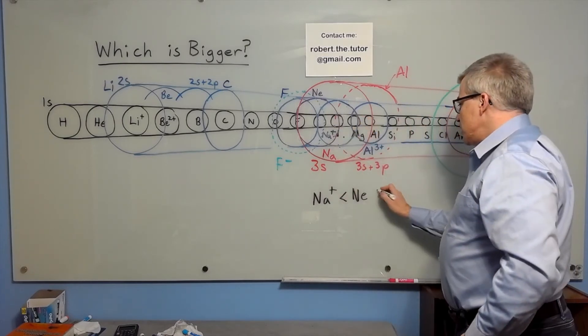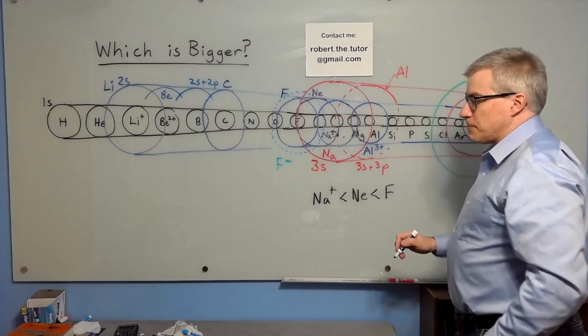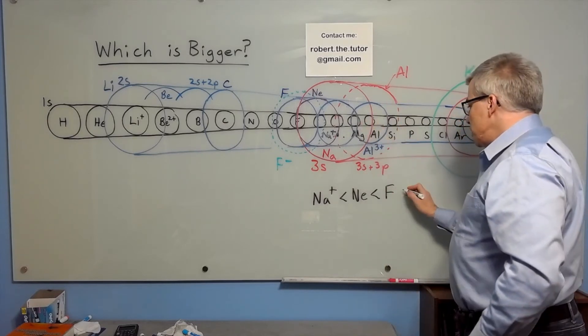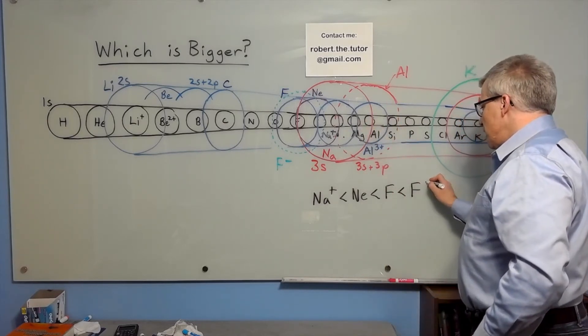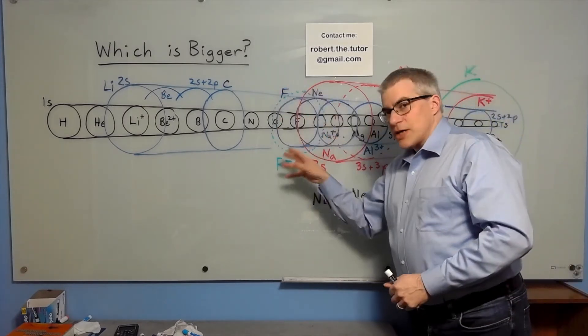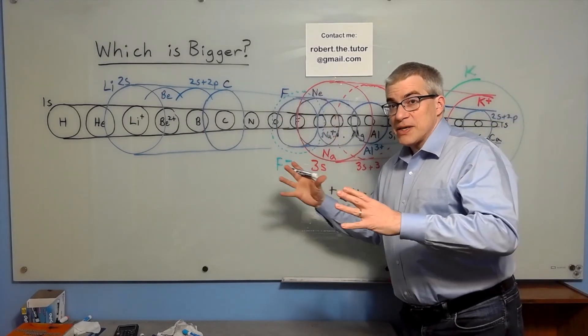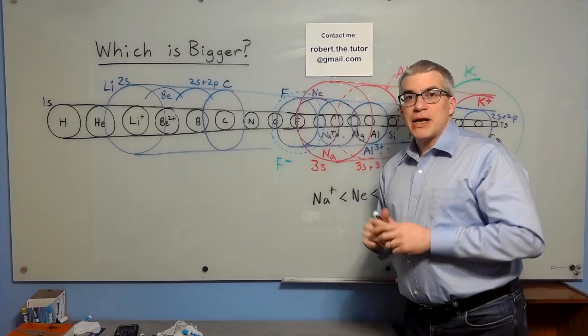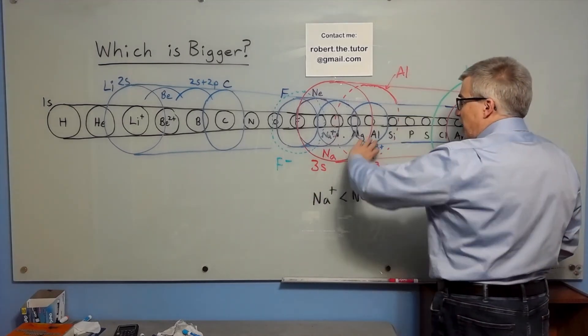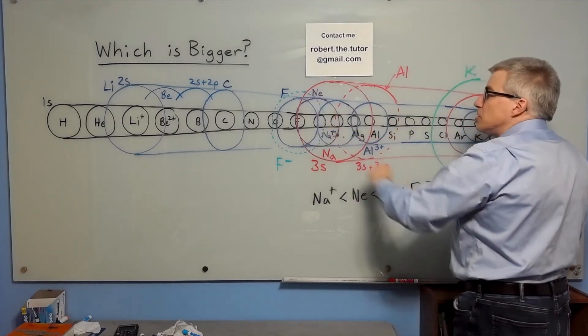And neon is smaller than fluorine. And fluorine is smaller than F-, because if you add an extra electron, the electrons are all repelling each other. So that puffs up the atom a bit. Not as much as adding a whole new shell does, but there's an effect.